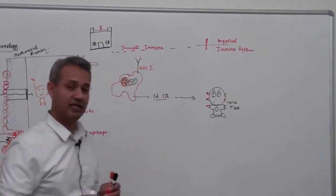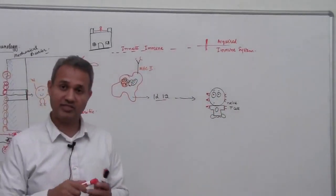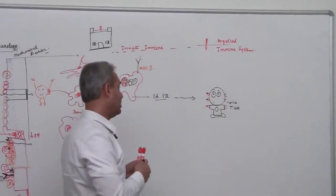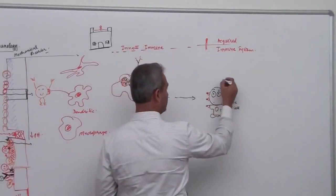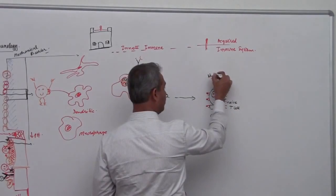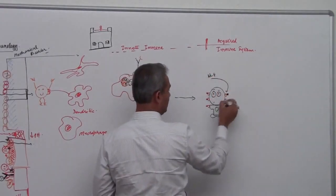This naive T cell also shows receptors to allow interleukin-4, interleukin-4 to come and attach as well.